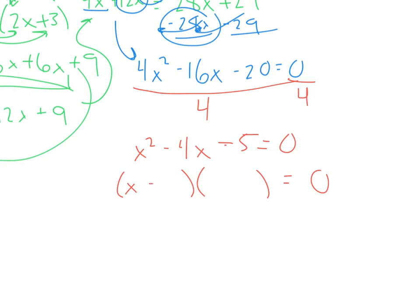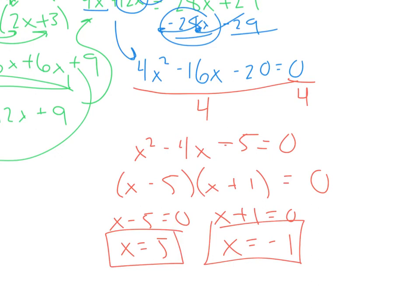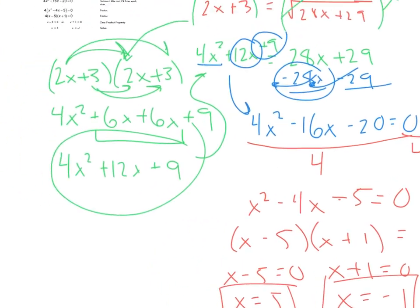We're going to factor this. It looks like x minus 5, x plus 1. Use 0 product property here. So x minus 5 equals 0, x plus 1 equals 0. So x equals 5 and x equals negative 1. It is kind of a beast. It's a long question. And then you say here, oh great, I'm done. Well, you're not done yet. Remember, we need to check for extraneous solutions.